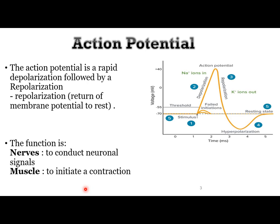The action potential is formed of rapid depolarization followed by rapid repolarization. Repolarization means returning of the membrane potential to resting state. The function of the action potential in the nerve is to conduct neuronal signals between nerves and the nervous system, and in muscle to initiate muscle contraction.